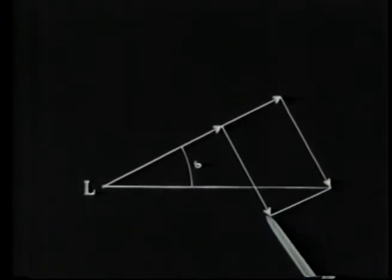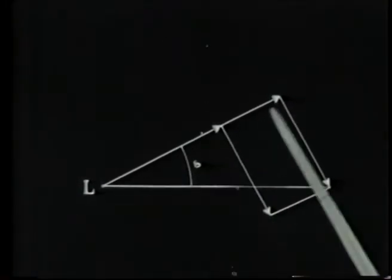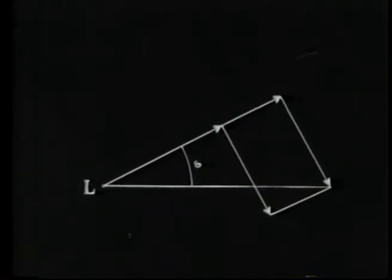As the wind mileage vectors are equal and parallel, this line is parallel to this one, the heading of the aircraft. And this angle is equal to the drift angle delta.